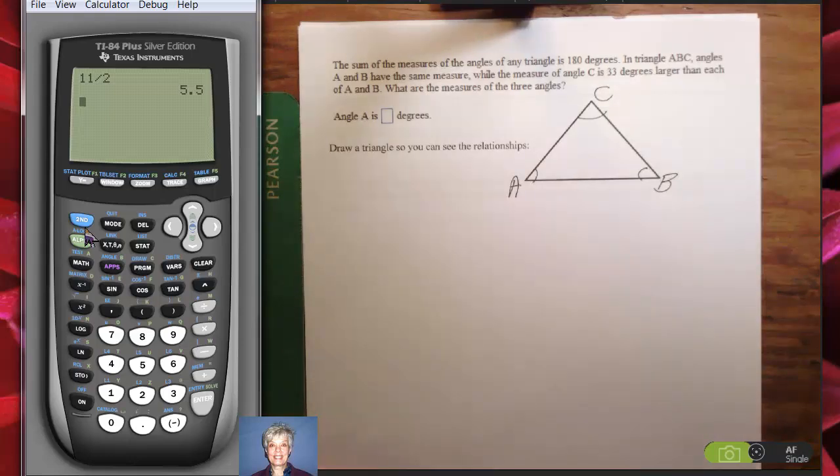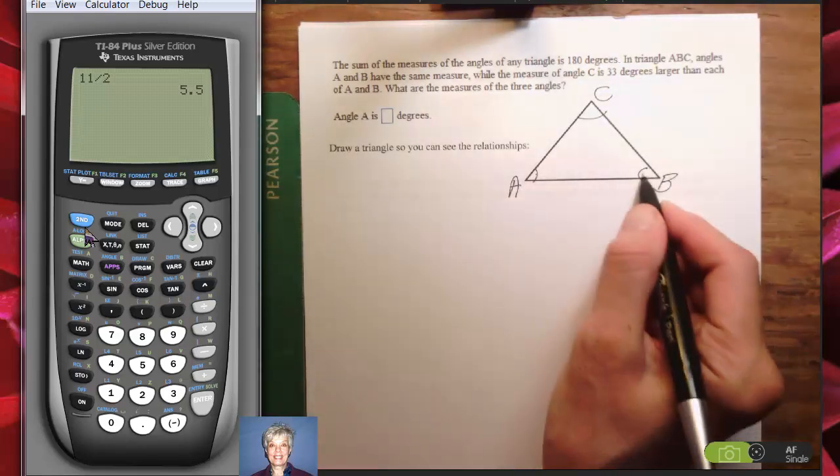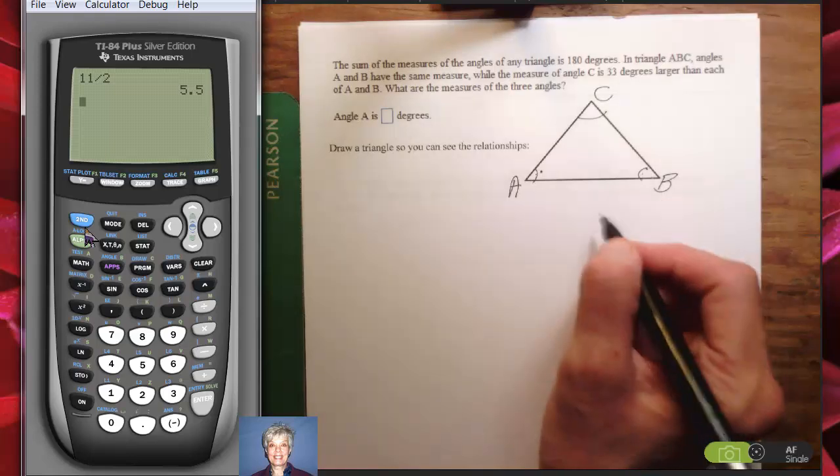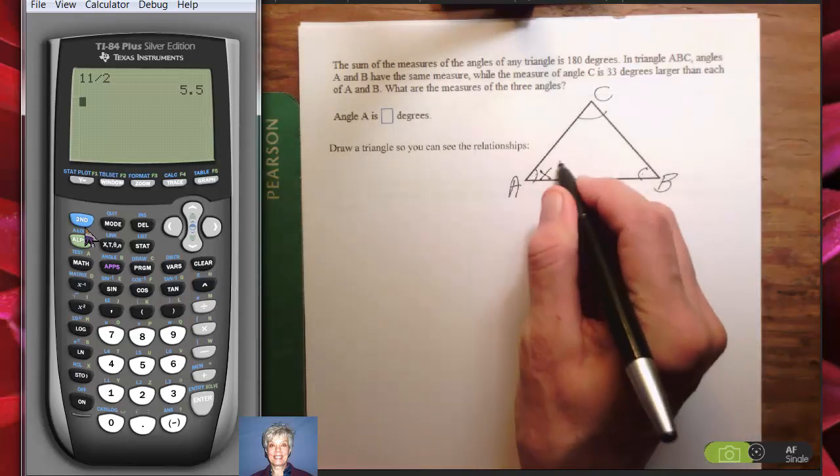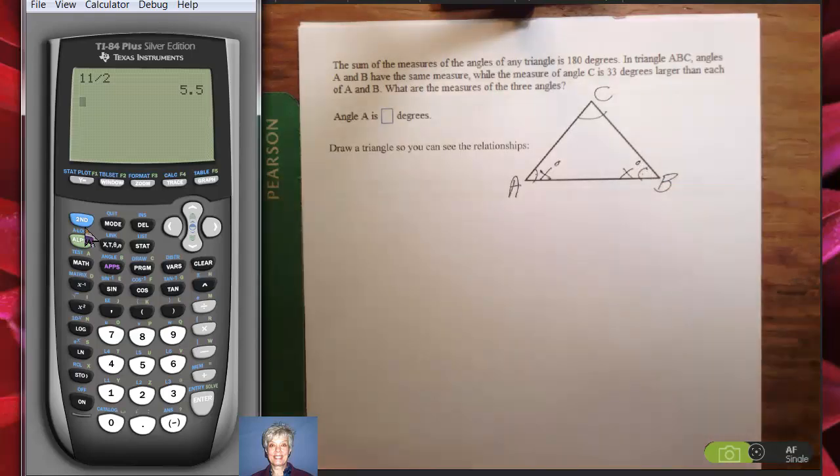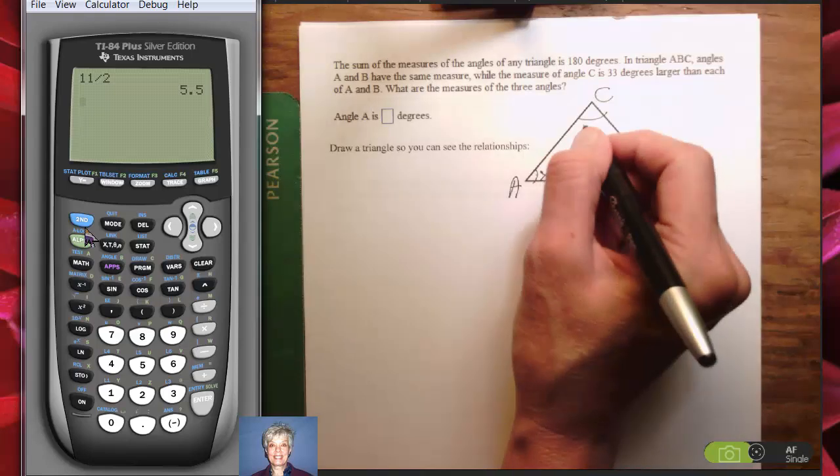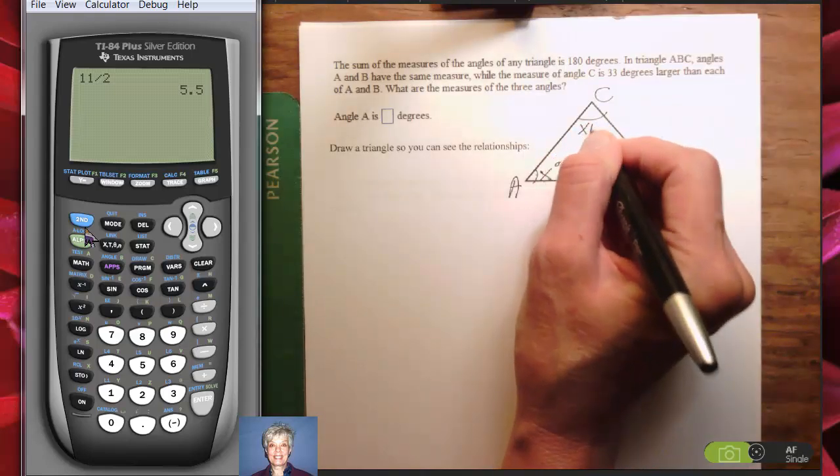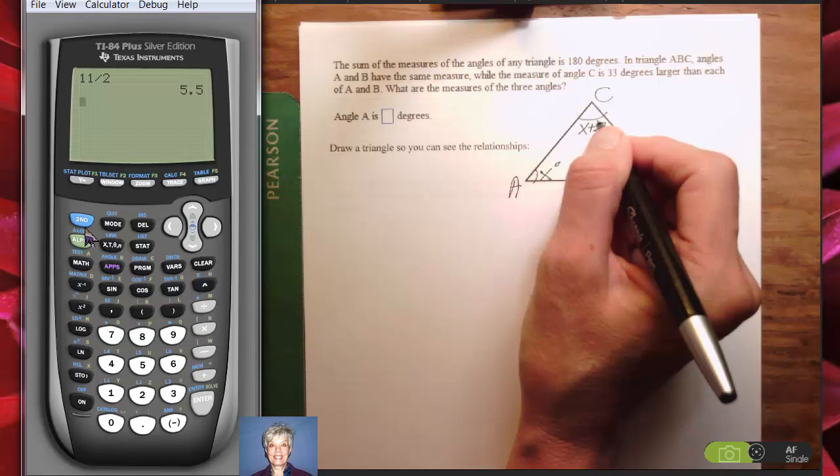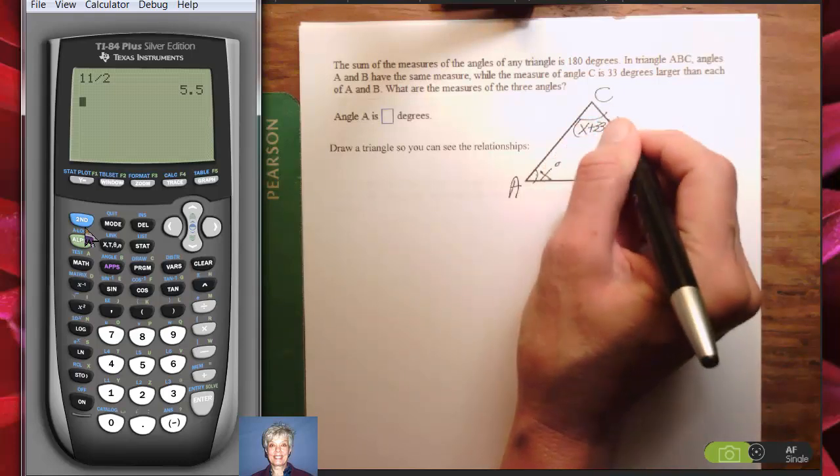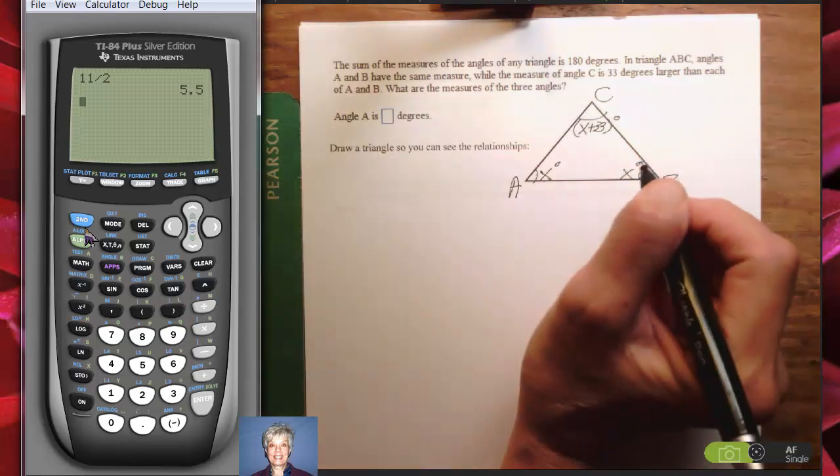In triangle ABC, the angles A and B have the same measure. That is, this and this are equal. The number of degrees here and the number of degrees here are equal. So let's call them x degrees. The measure of angle C is 33 degrees larger than each of A and B. That means that since A and B are each x degrees, this is going to be x plus 33 degrees.